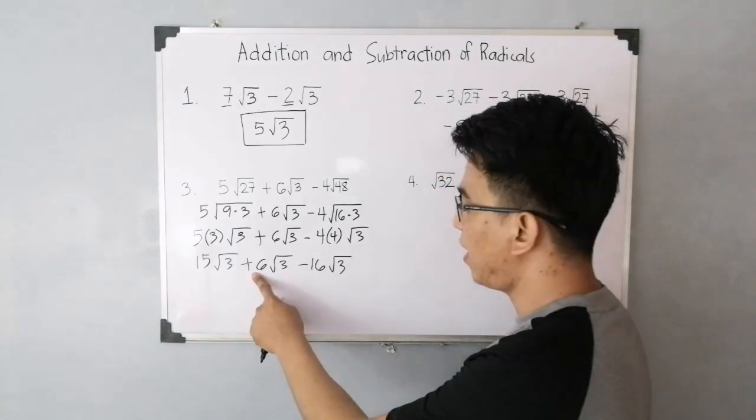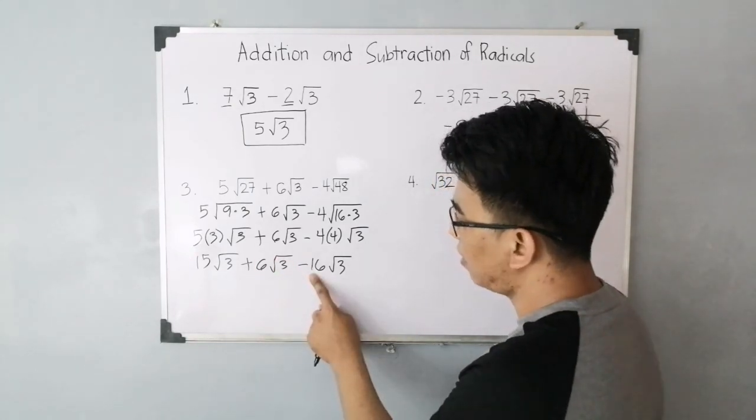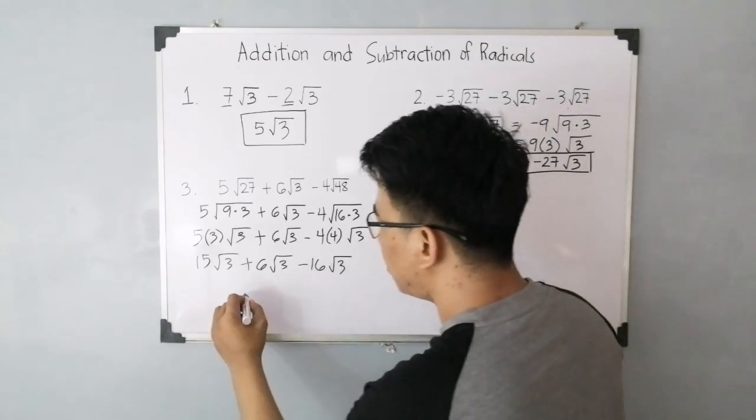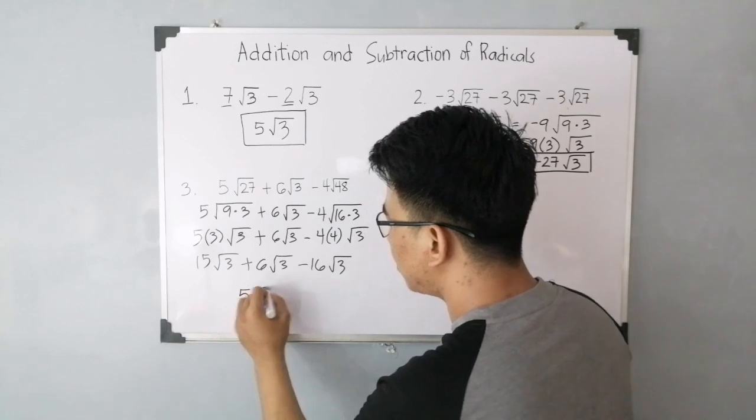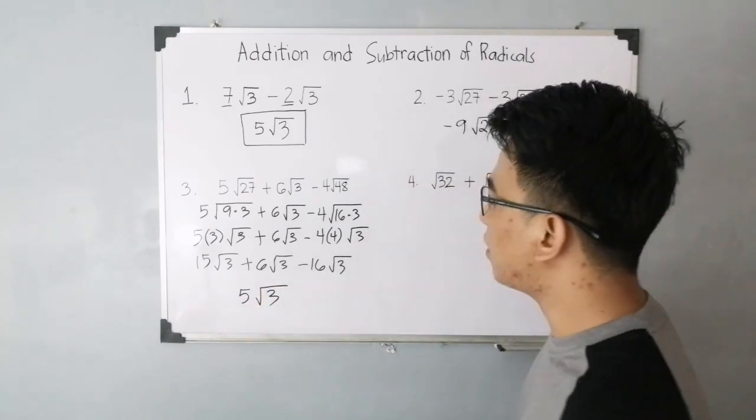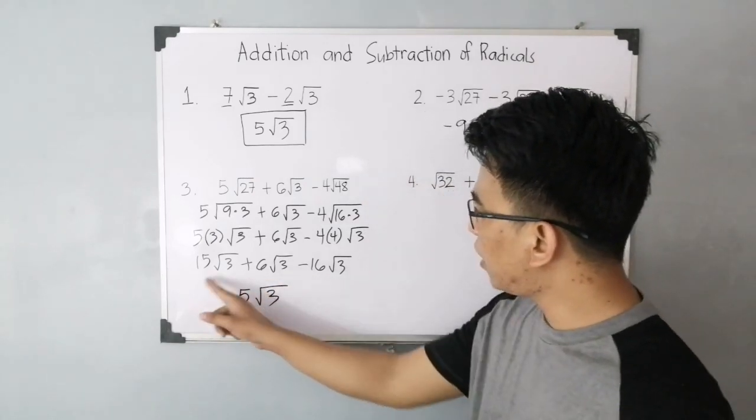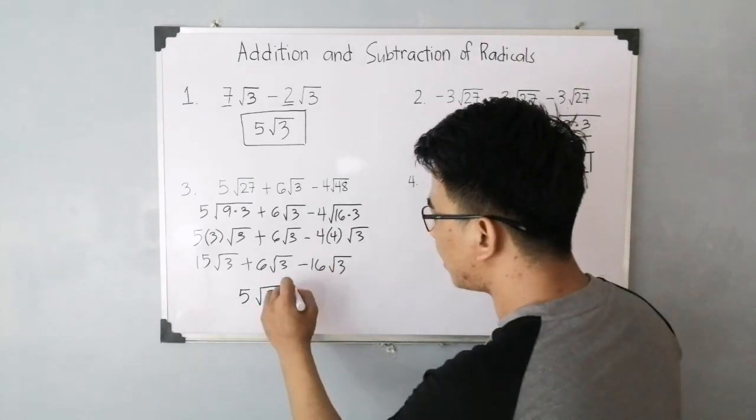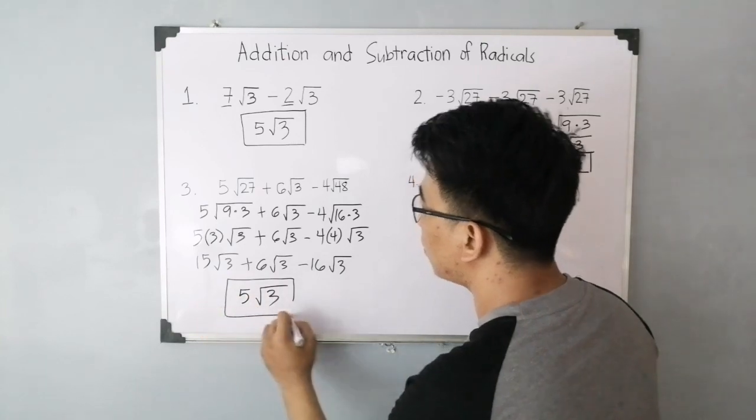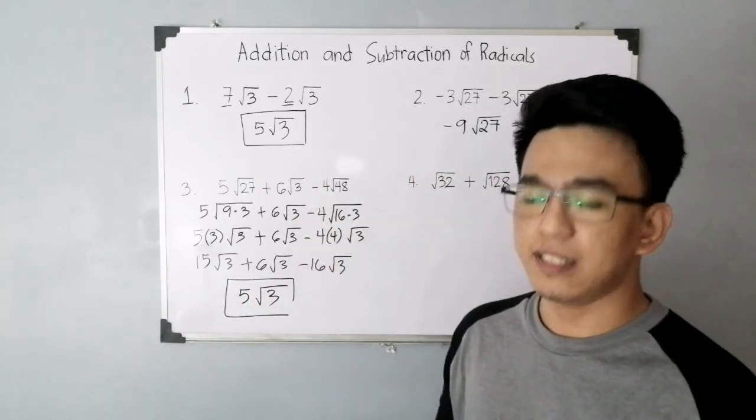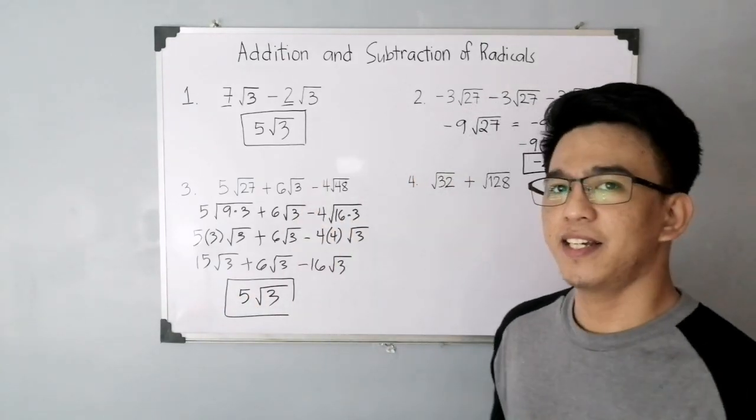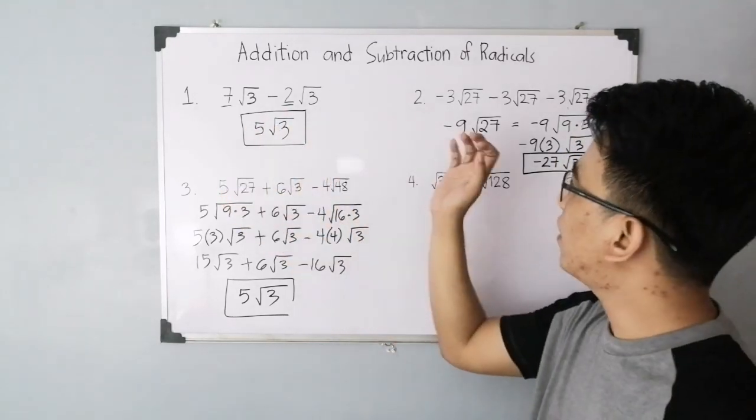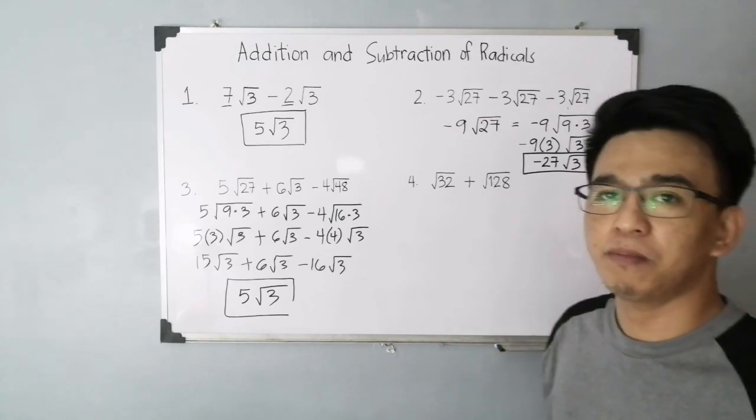So you have 15 plus 6. This is 21. Minus 16. This will give you how many? 5. So you have 5 times the square root of 3. Let me just check if I made a mistake. 15 plus 6 is 21. Minus 16. Okay, 5. So the correct answer is 5 times the square root of 3. Oh, they're the same. Just a coincidence. Wasn't intentional.